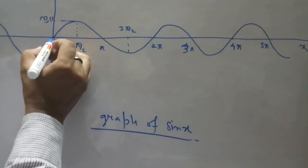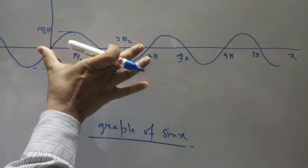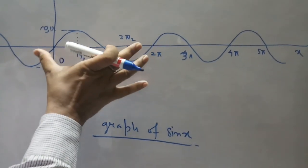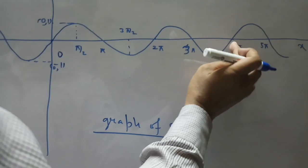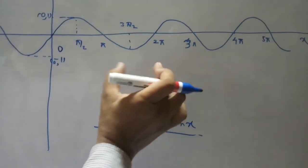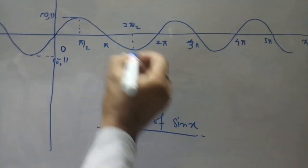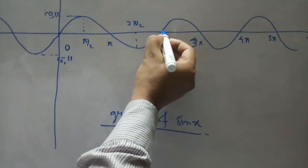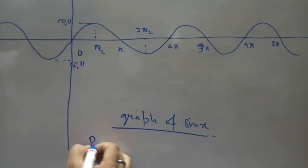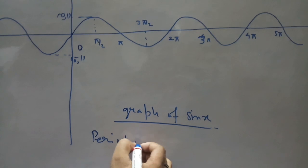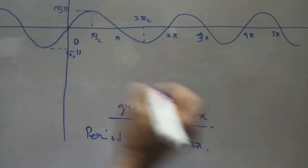Therefore, the graph of the function increases over a particular interval from 0 to 2π. From 4π it further increases, and so on. The minimum increase interval is 2π, then 4π, then 6π. Therefore, the minimum period over which the function repeats is 2π. From the graph, the period of sin x is 2π.